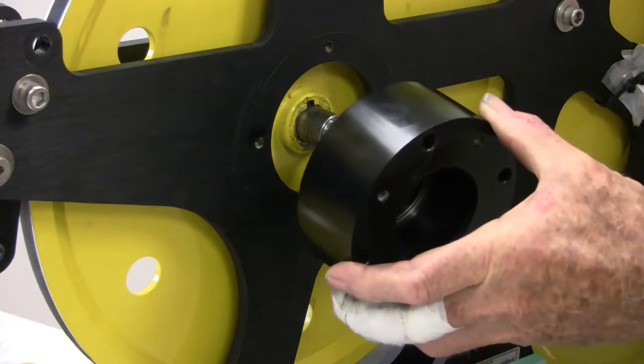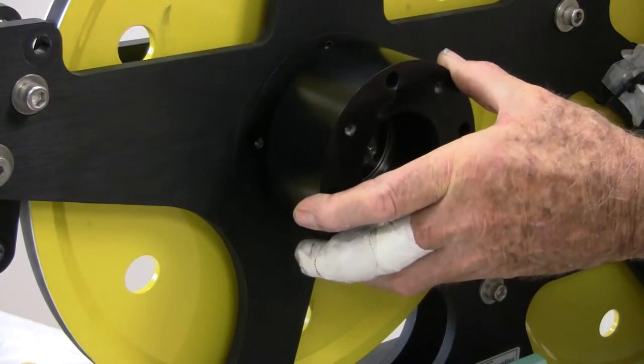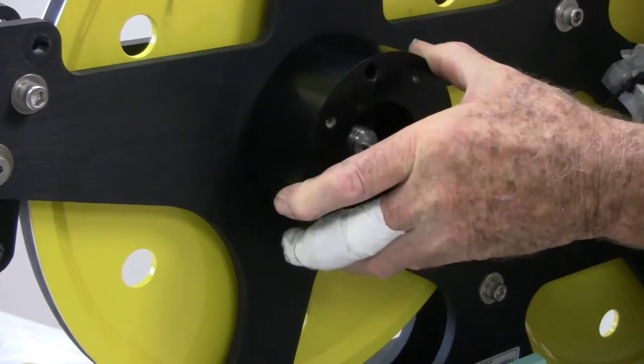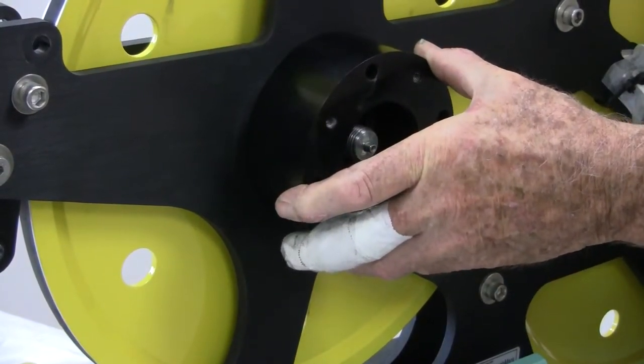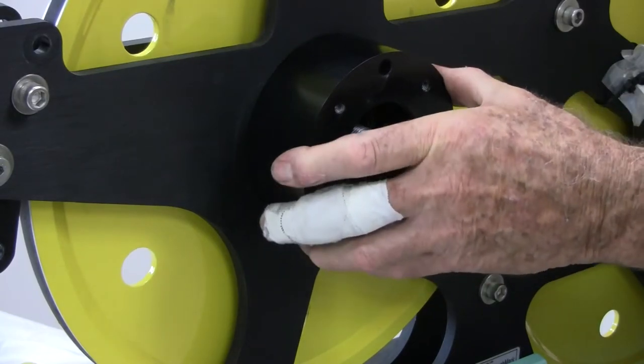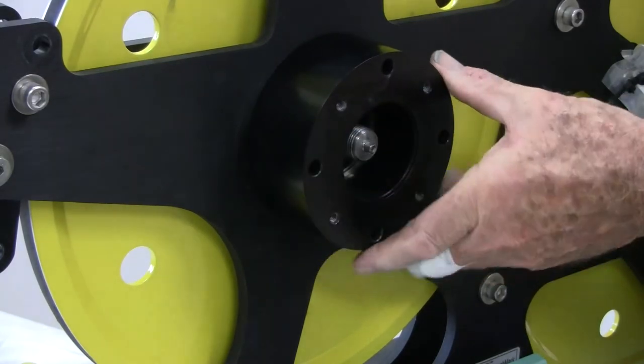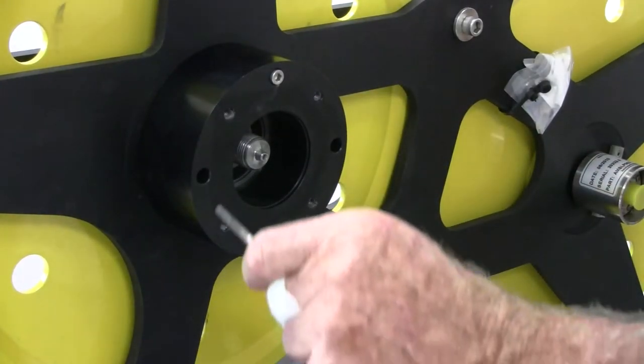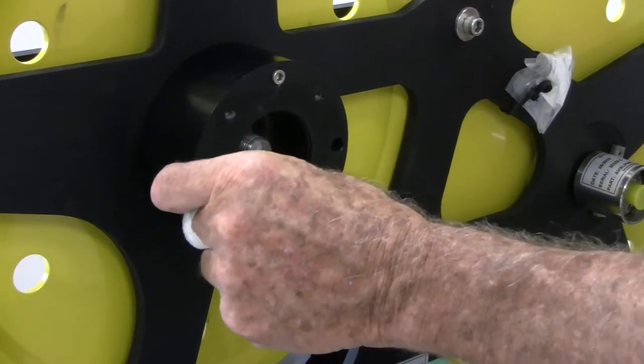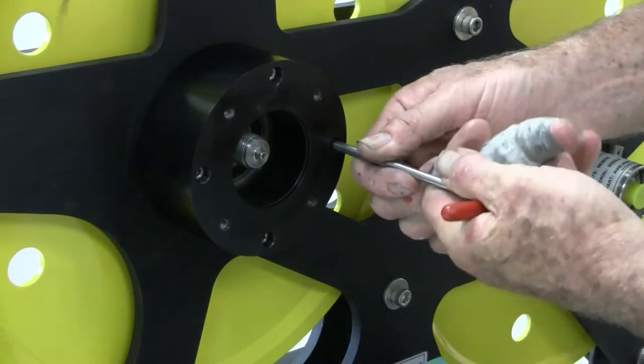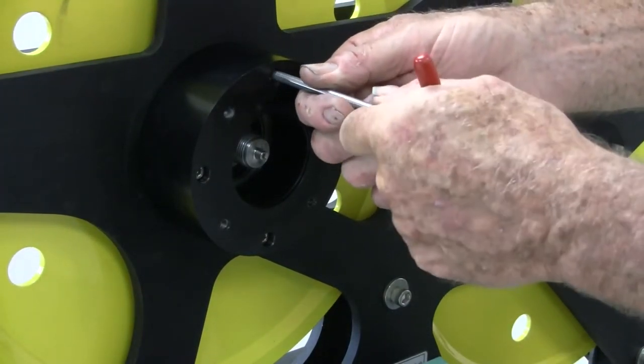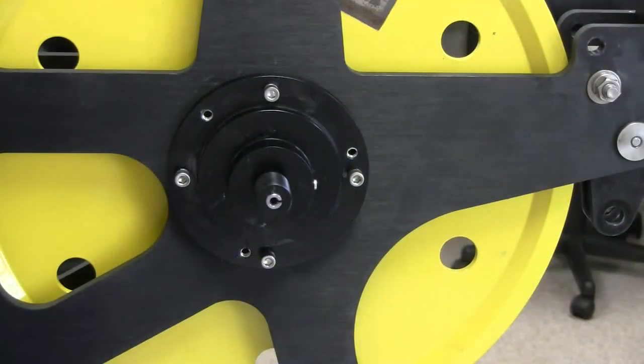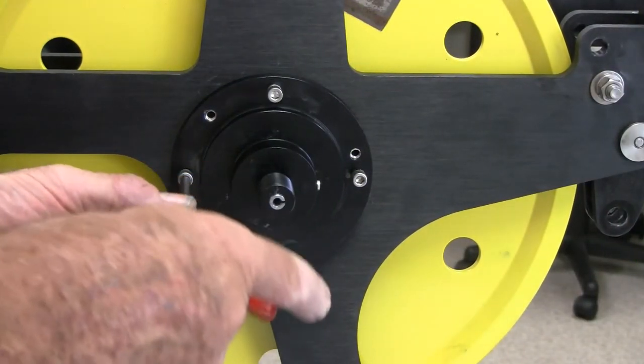On the encoder side of the frame, reinstall the other hub. Rotate the hub to align the screw holes on the hub and the frame. Reinstall and tighten the four screws on the hub. On the other side of the frame, tighten the four screws holding that hub in place.